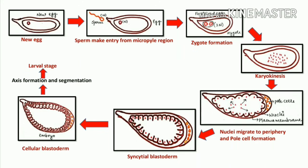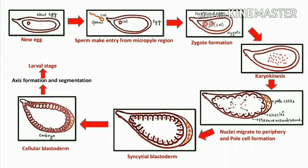After that there is formation of a syncytial blastoderm. This is a condition called syncytial — all the nuclei are located around the surface in the periphery region. The overall egg is now empty in the middle, and all the nuclei have covered the peripheral interior portion. After that there is formation of a cellular blastoderm.